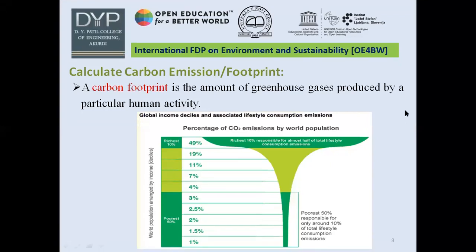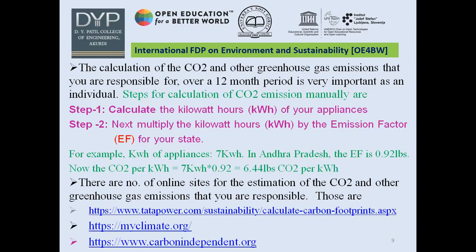Now let us see how to calculate carbon emissions or footprint. First, let us understand what carbon footprint means. Carbon footprint is the amount of greenhouse gases produced by a particular human activity. The graph shows the percentage of CO2 emissions by the world population by income. From the graph, it is clear that the 10% richest people in the world are responsible for generating almost half of CO2 emissions, while only 50% of the poorest people are responsible for generating 10% of CO2 emissions. The calculation of CO2 and other greenhouse gas emissions that you are responsible for over a 12-month period is very important as an individual.